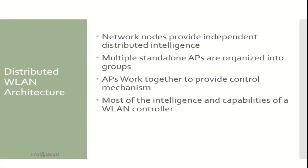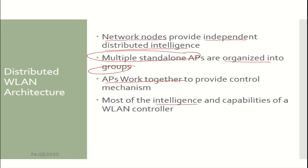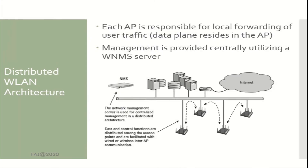Distributed wireless LAN architecture. Network nodes provide independent distributed intelligence. Multiple standalone APs are organized into groups and work together to provide control mechanisms, providing most of the intelligence and capabilities of a wireless LAN controller. Each AP is responsible for local forwarding of user traffic, where the data plane resides in the AP. Management is provided centrally utilizing a WNMS server.